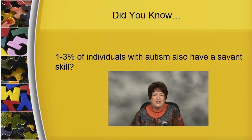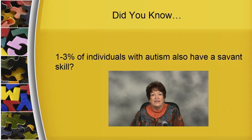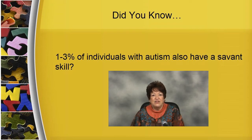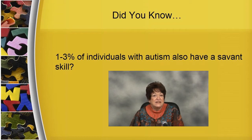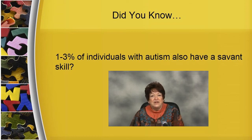Between 1 and 3 percent of individuals with autism also have what's known as a savant skill — that's about 2 out of 100 individuals who experience autism. A savant skill is a talent that an individual possesses that wasn't taught; it's an innate gift. For example, an ability to calculate math, or to possess perfect pitch, or having some type of artistic talent. The ability to read at an extremely early age, known as hyperlexia, would also be considered a savant skill.